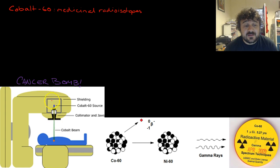This machine is a cancer bomb. Basically you have a cobalt-60 source up here and it emits radiation which is funneled through here in a beam. That radiation is gamma radiation.